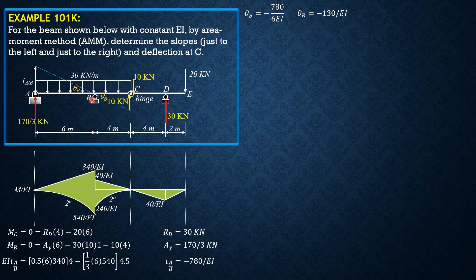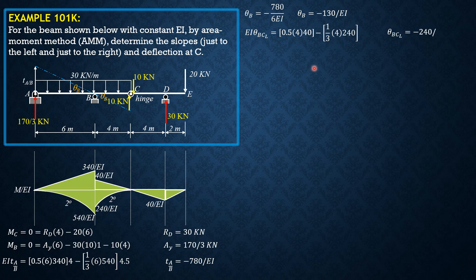Next, compute EI·θ_(B to C_left): this is the area between B and C just to the left of C, which equals 0.5 times 4 times 40 minus one-third of 4 times 240. This equals negative 240/EI. Negative means the rotation from the tangent at B to the tangent at C_left is clockwise.